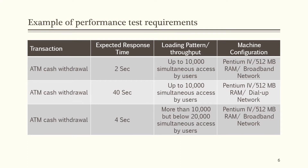Here is an example of performance test requirements. In this table, you can see ATM cash withdrawal transactions, expected response time, the machine loading pattern or throughput, and the machine configurations. Machine configurations are the same except network configurations. However, the load pattern changes for different transactions. According to the table, expected response time gets double when the load patterns are double but the machine configurations are the same — you can see this in the first and last row of the table.